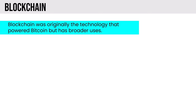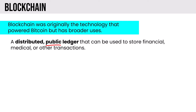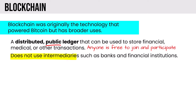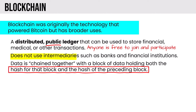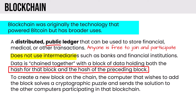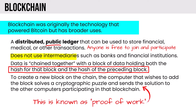Blockchain was originally the technology that powered Bitcoin but has broader uses. It's a distributed public ledger that can be used to store financial, medical, or other transactional data. Anyone is free to join and participate — it does not use intermediaries such as banks. The data is chained together with each block holding both the hash for that block and the hash of the preceding block. To create a new block, the computer solves a cryptographic puzzle and sends the solution to other participating computers — this is known as proof of work.